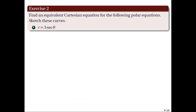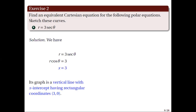For number 4, we have r equal to 3 secant theta. In converting this to a Cartesian equation, we divide both sides by secant theta, which gives us r cosine theta equal to 3. Using our conversion equation, we get x equal to 3. Hence, its graph is a vertical line with x-intercept having rectangular coordinates (3, 0), and its graph is shown on the right.